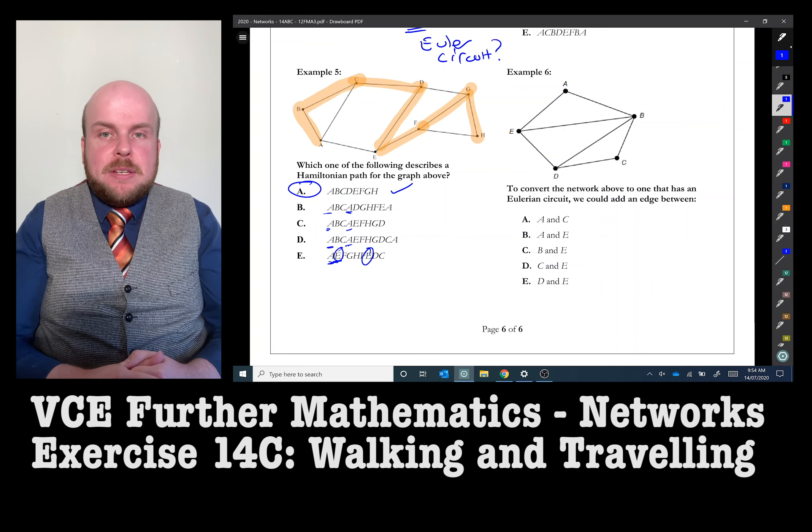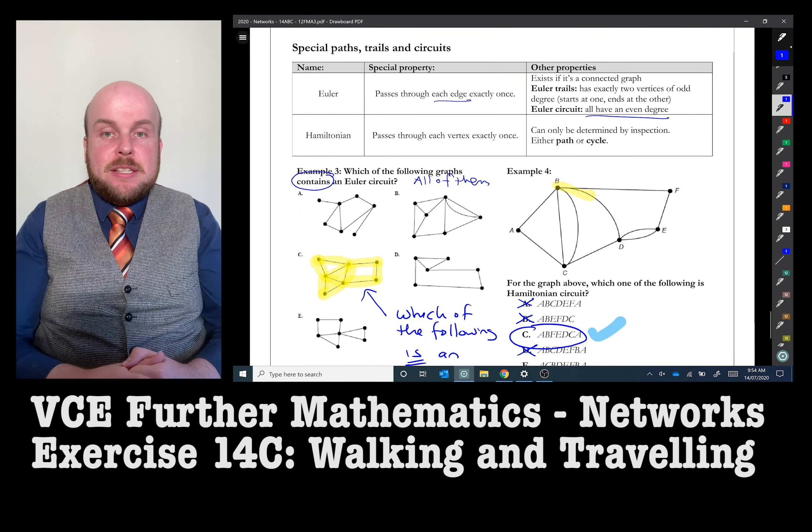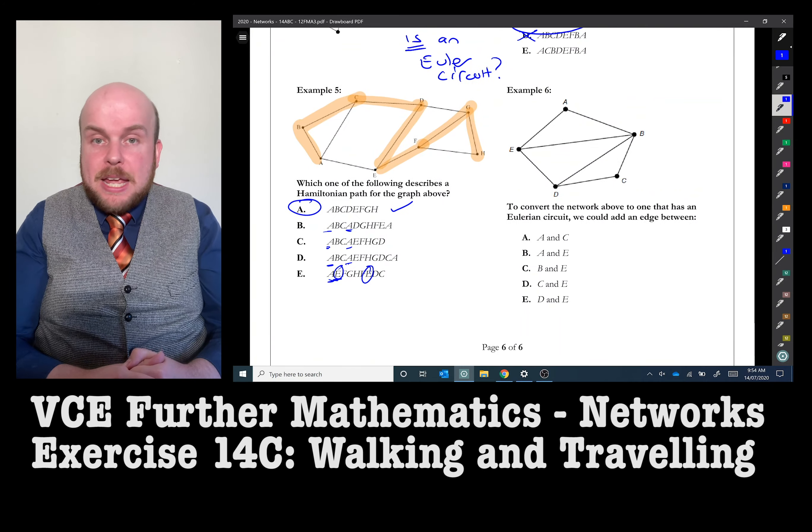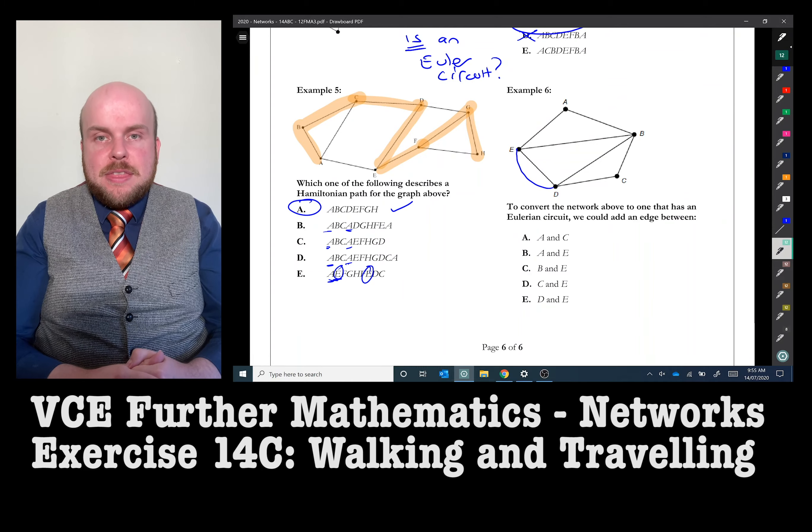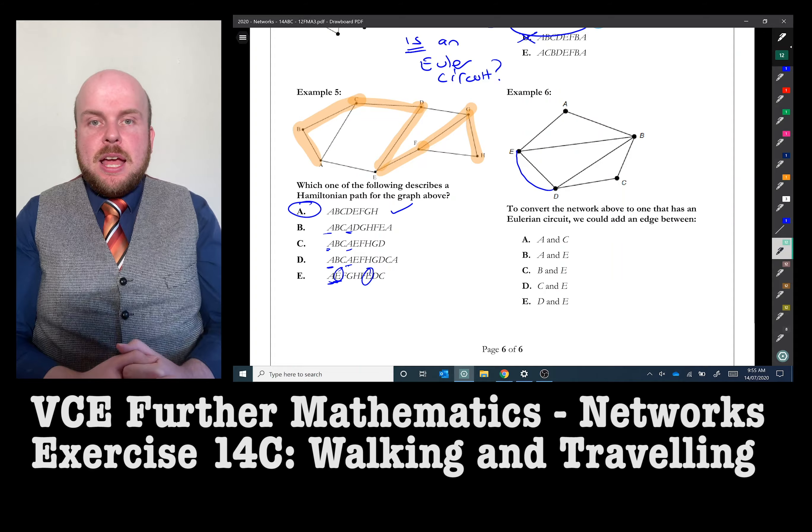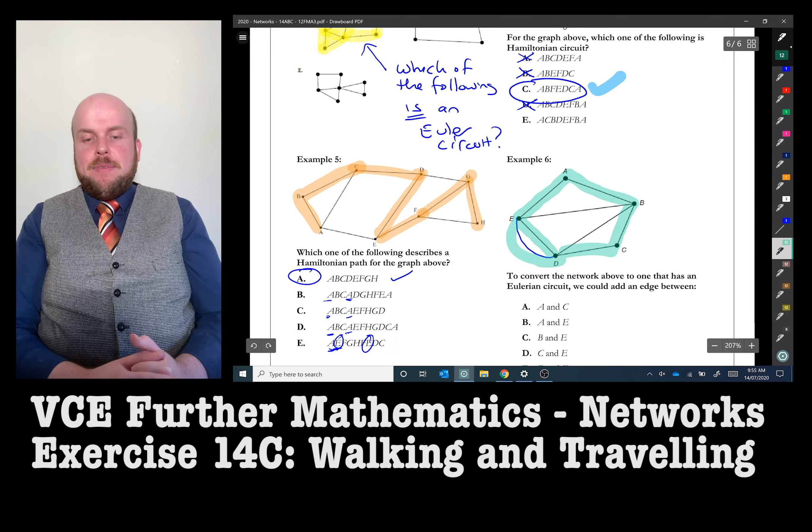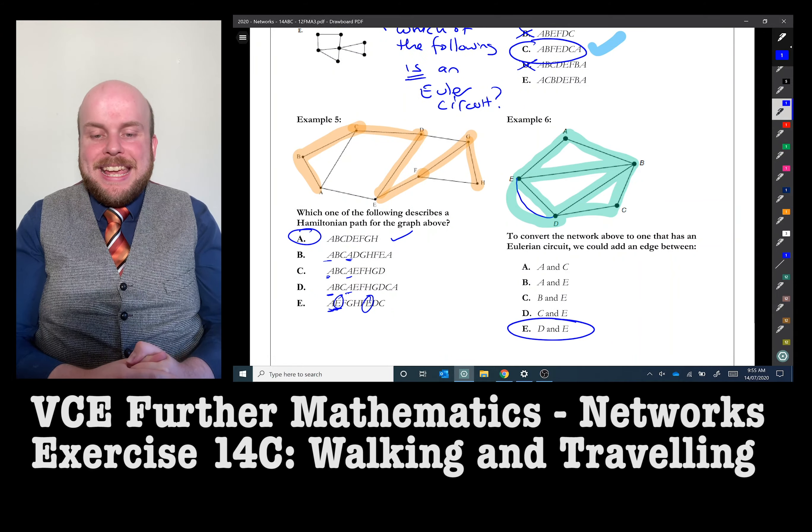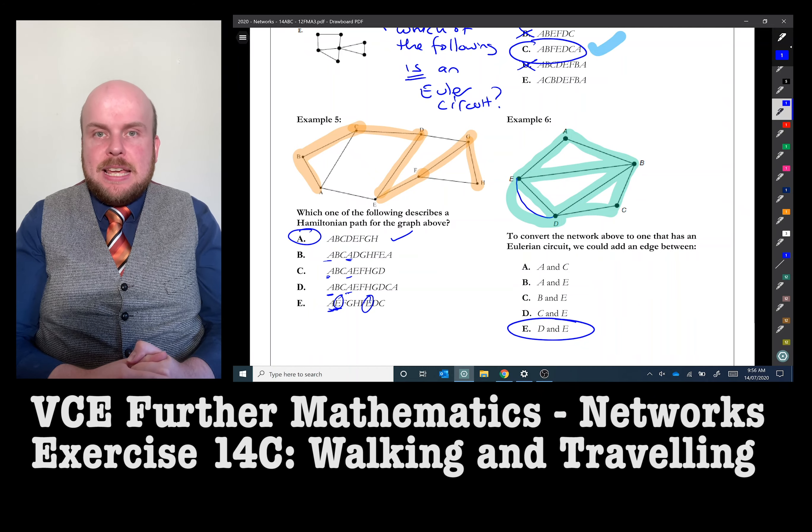So an Eulerian circuit means that all of the vertices have to be of an even degree. Therefore, I simply have to define which of my vertices have an odd degree, make an edge to those two, and that will determine, or that will create an even degree, and so they will all be even. And the answer to this would be E, connecting ones from D and E.